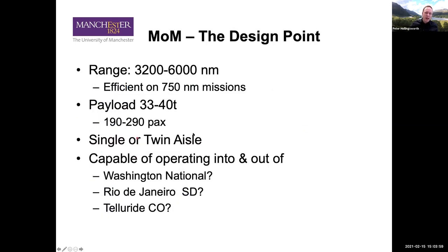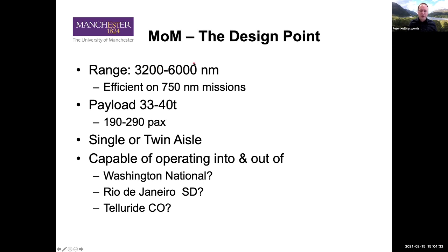We're going to talk about the single or twin aisle case and the airport cases. What we're talking about now is estimating our 33 to 40 ton, 190 to 225 typical passengers — that's the way we tended to load out 757-300s, 767-200s, and A310s for medium to longer range missions. We're going to look at the 4,000 nautical mile range as our option, just over the middle of that range.